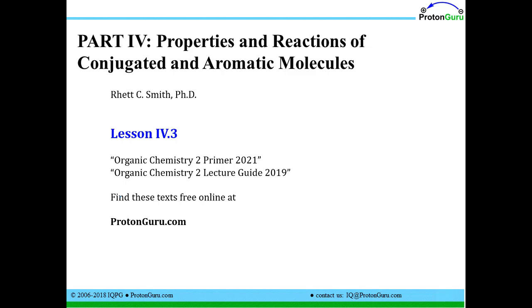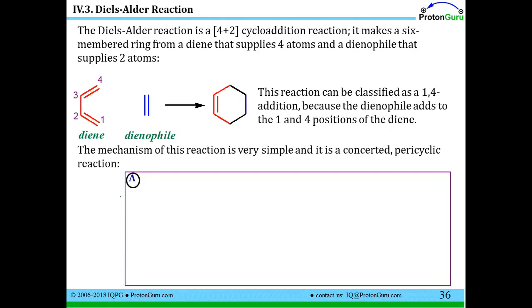Hi everybody, welcome back to part four of our Organic Chemistry II Primer lessons. We're going to talk about lesson 4.3 today, and this is continuing our discussion of the reactions that conjugated dienes can do that are different from what we saw for isolated alkenes in section three. The reaction we're going to talk about here is the Diels-Alder reaction.